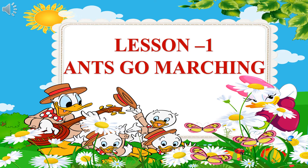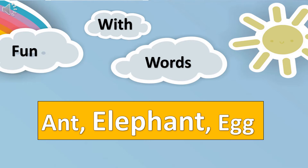Ants go marching. Today's keywords are: ant, elephant, egg. I repeat: ant, elephant, egg.